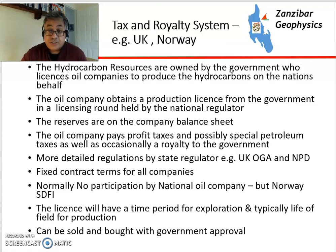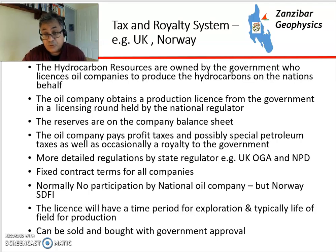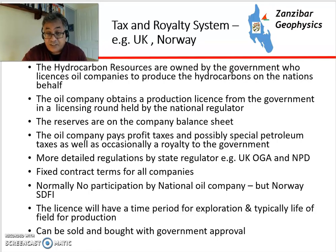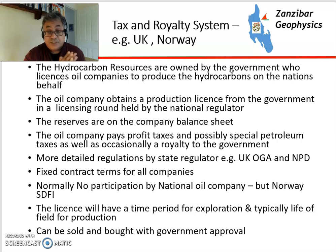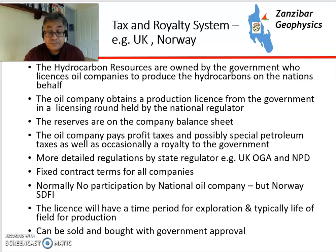Moving to the next stage, which is the tax and royalty system, or the concession system — for example in Britain and Norway. The hydrocarbon resources are owned by the government (it used to be the Crown in the UK — not that the queen personally owns it, it's the government). They license oil companies to produce the hydrocarbons on the nation's behalf, through periodic licensing rounds. Companies awarded a license produce the hydrocarbons, pay tax to the government, and pay royalty to the government in some cases. Sometimes there's also a special petroleum tax. The reserves are on the company balance sheet, because the right to produce the reserves belongs to the company.